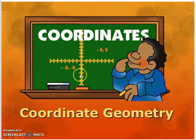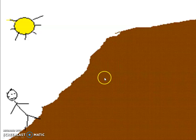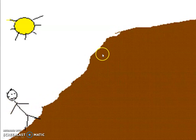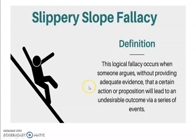Coordinate Geometry is totally related to the x and y-axis, as seen in this diagram. What do you see in this picture? This is a van climbing on a mountain, there is the sun — what does this indicate? In this diagram, slippery slope fallacy: this logical fallacy occurs when someone argues without providing adequate evidence that a certain action or proposition will lead to an undesirable outcome via a series of events. That is 'slippery' — meaning our target is slope in mathematical language.